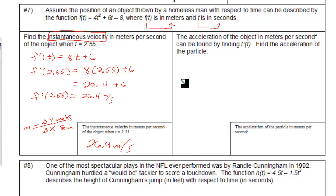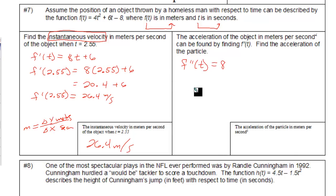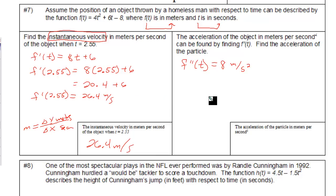The acceleration can be found by taking the second derivative. The second derivative is 8. This is measured in meters per second squared — it's how much the derivative is changing, which is what the second derivative represents.